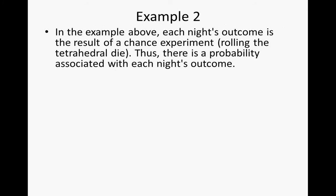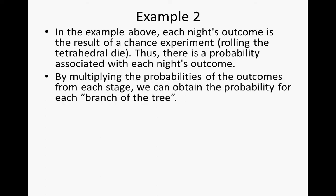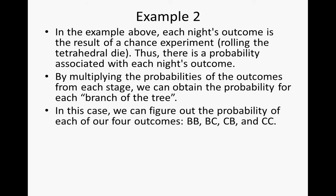Now let's look at Example 2. In the example above, each night's outcome is the result of a chance experiment — rolling the tetrahedral die — so there is a probability associated with each night's outcome. By multiplying the probabilities of the outcomes from each stage, we can obtain the probability for each branch of the tree. In this case, we can figure out the probability of each of the four outcomes: BB, BC, CB, and CC.